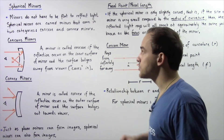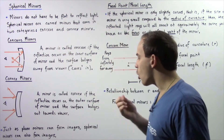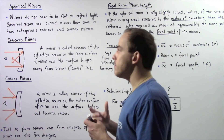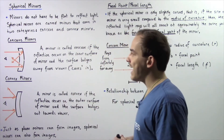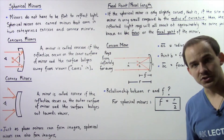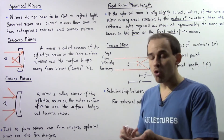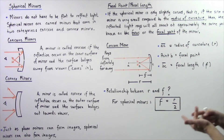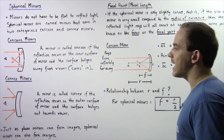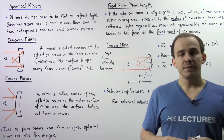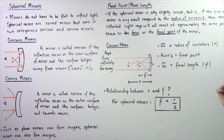Just like plane mirrors, spherical mirrors are also capable of forming images. But before we discuss the formation of images using concave and convex mirrors, let's discuss a few important terms. We're going to examine the focus, the focal point, the focal length, and the radius of curvature, as well as the relationship between the focal length and the radius of curvature.